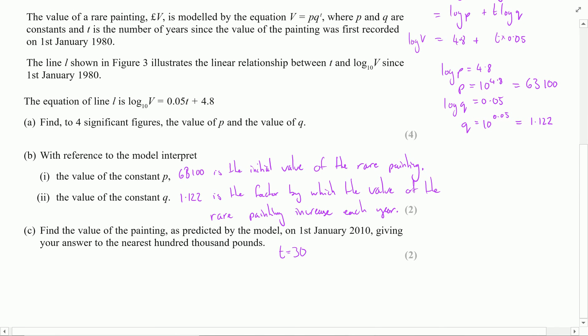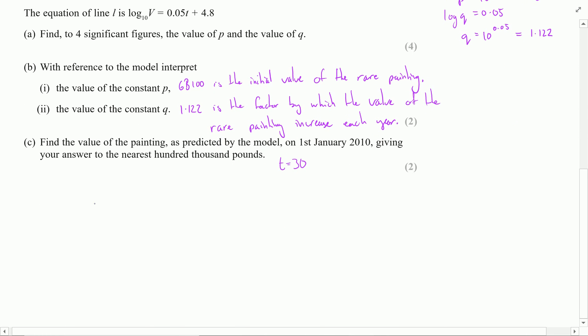So what I want to do is on my calculator say the value of the painting is going to be 63,100 times 1.122 to the power of 30. And if I throw that in, I end up with £1,994,412.